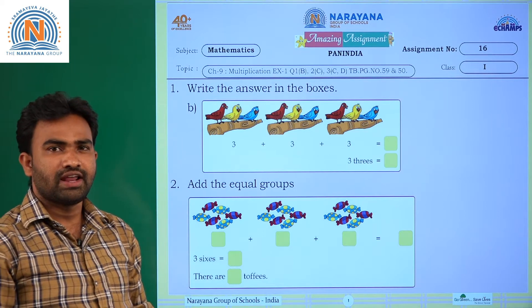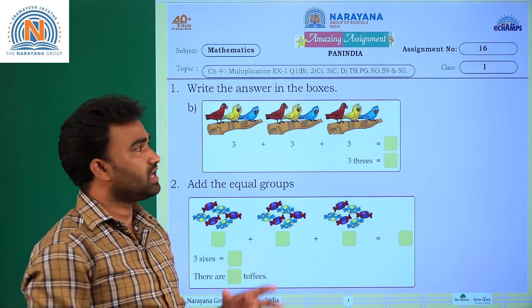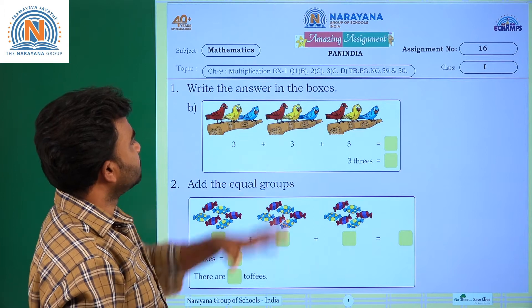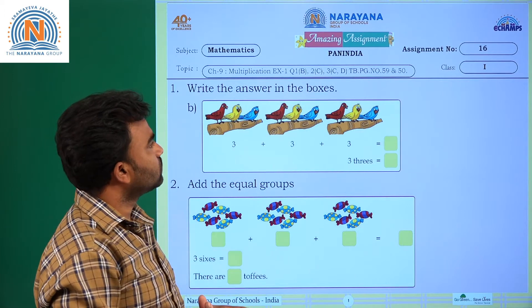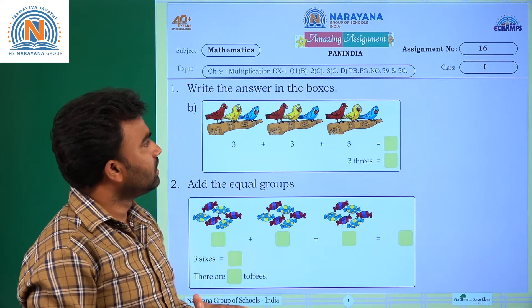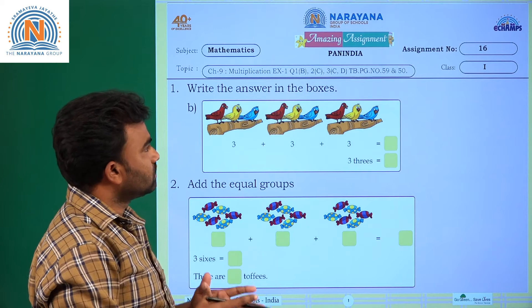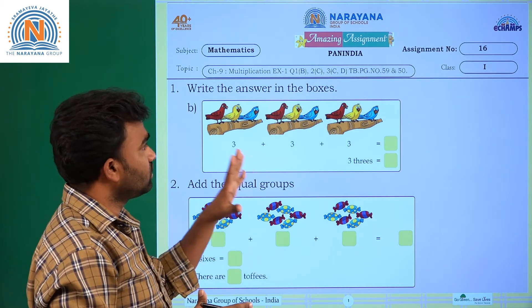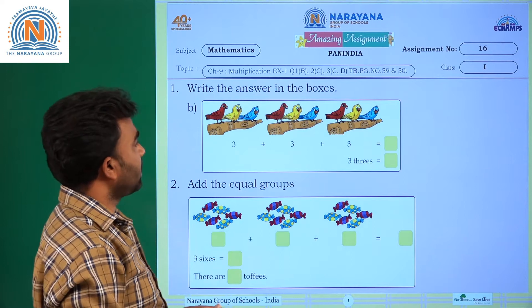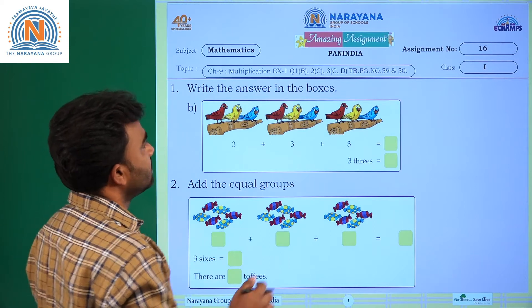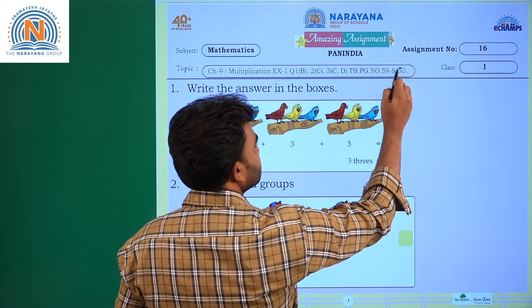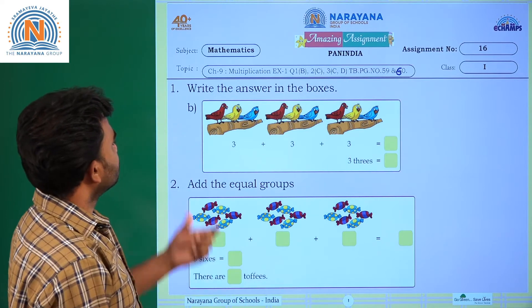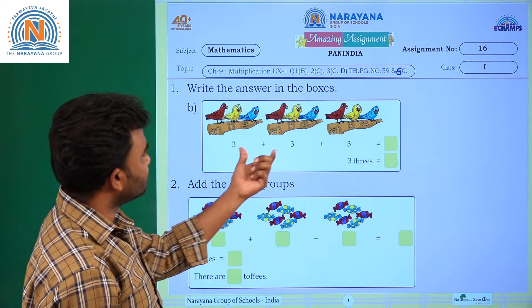Hi children, welcome to Nara and Alive Classes. Today's assignment is on Chapter 9, Multiplication — Exercise 1, Question B; Question 2C; Question 3C and D. For this you can refer to textbook pages 59 and 60.